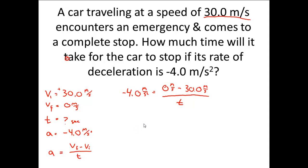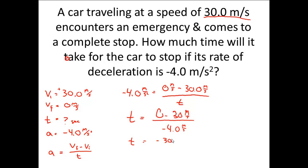A little algebra here — we'll rearrange this and isolate T. So if I want to solve for time, I simply have to isolate it. That's going to be time equals zero minus 30 meters per second, divided by negative 4.0 meters per second squared. Time equals negative 30 meters per second divided by negative 4 meters per second squared, and my calculator gives me that the amount of time is going to be around 7.5 seconds.